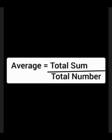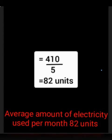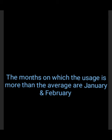The total number is 5. We have to divide 410 by 5 and we will get the average. The average electricity is 82. January and February are the months on which usage is more than the average.